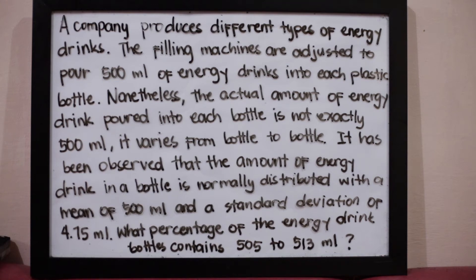A company produces different types of energy drinks. The filling machines are adjusted to pour 500 ml of energy drinks into each plastic bottle. Nonetheless, the actual amount of energy drink poured into each bottle is not exactly 500 ml. It varies from bottle to bottle. It has been observed that the amount of energy drink in a bottle is normally distributed with a mean of 500 ml and a standard deviation of 4.75 ml. What percentage of the energy drink bottle contains 505 to 513 ml?